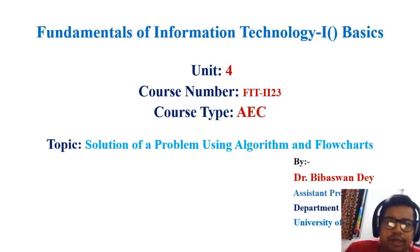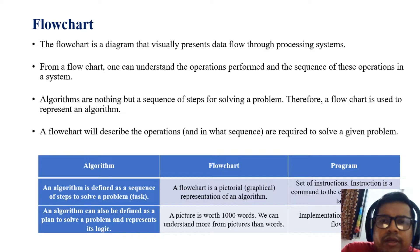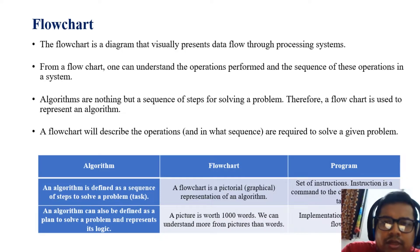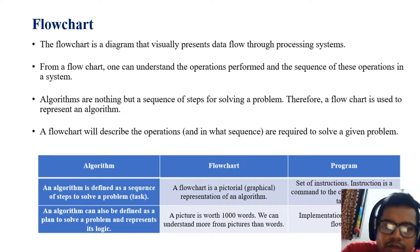Today we discuss the solution of a problem using algorithm and flowchart. A flowchart is a diagram that visually represents data flow through a system. From a flowchart one can understand the operations, the platform, and the sequence of operations in a system. Algorithms are nothing but a sequence of steps for solving a problem. A flowchart is a pictorial representation of an algorithm that describes the operations and the sequence required to solve a given problem.